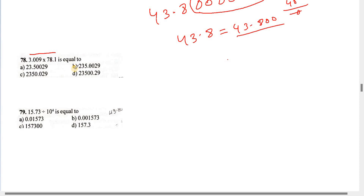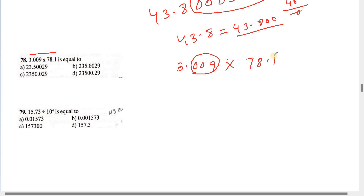You can solve this problem. 3.009 into 78.1 — you can solve this problem using tricks. This involves complex constructs, or you can solve this problem with the rules. 4.004 into 78.1.